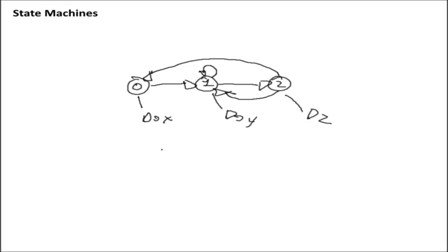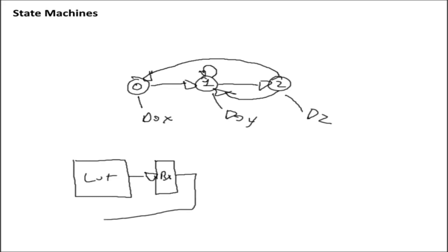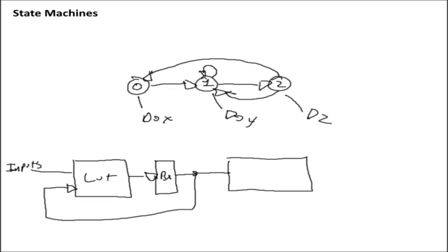If you were to look at that as an actual circuit, we would have a register and a transition lookup table feeding into it along with our inputs. Depending on the state the state machine is in, we want to perform a different action. So we take the current state and feed it into an action lookup table, which creates whatever action we want on the output. This particular configuration — a lookup table connected directly to the state — is what we refer to as a Moore machine.